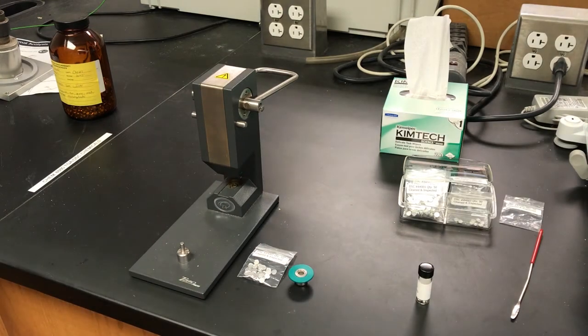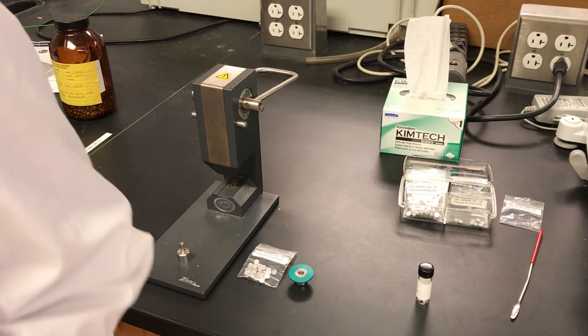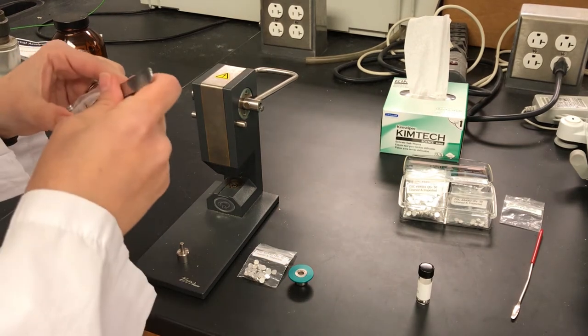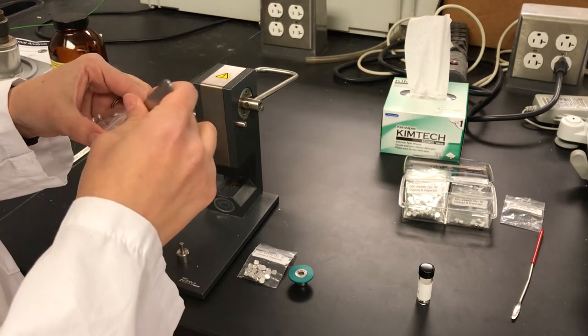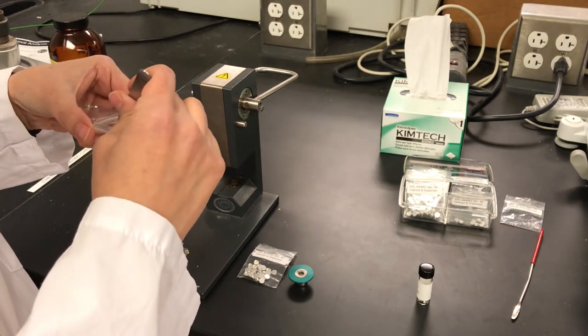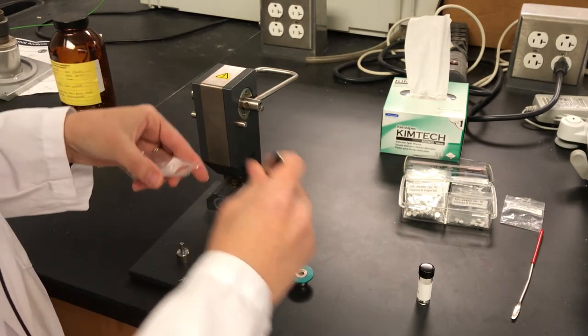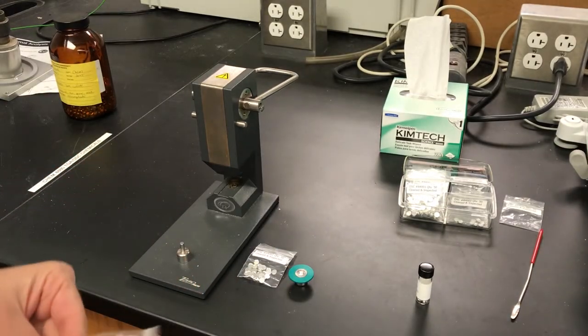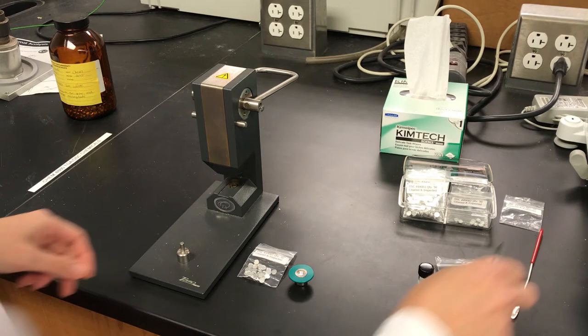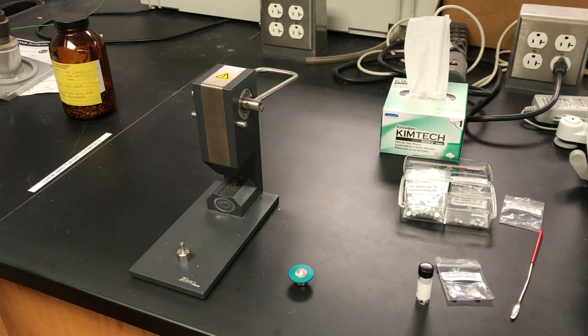So we need to use our pans and our lids. So I'll show you how to put together a sample pan. It's a good idea to use some forceps when you're handling these pans so you don't get your oils from your fingers on the pans themselves. And these are aluminum pans. They can be heated up to 600 degrees Celsius, but no higher than that as they'll melt and cause a large problem in the instrument.